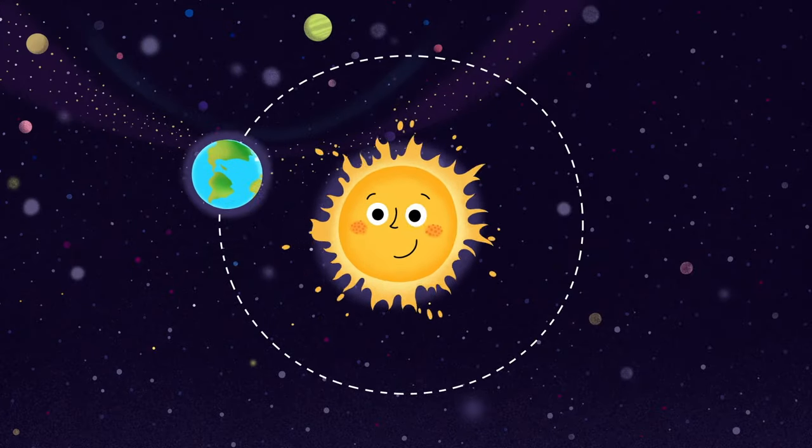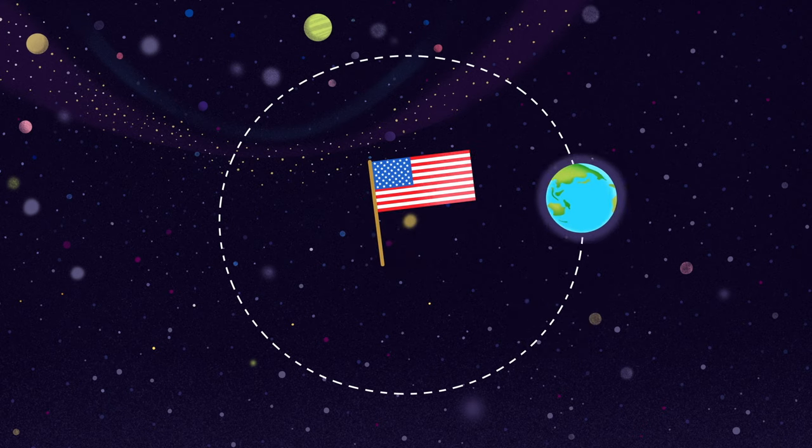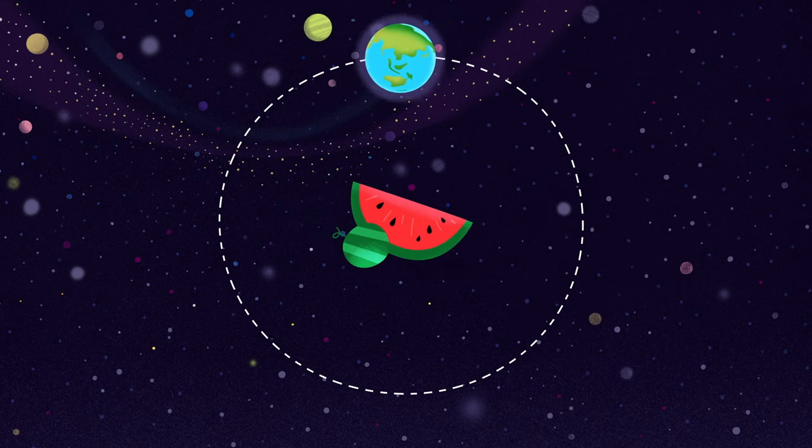Even the calendar we use is related to the sun. What we call a year is the time in which the Earth makes one revolution around our star.